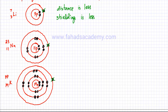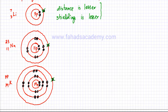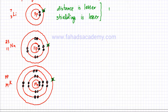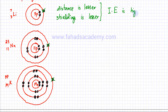Both distance and shielding are lesser for lithium, which means it's close to the nucleus and there would be more attraction. That suggests that the ionization energy of lithium compared to the other two is going to be higher — it's going to require a lot more energy to remove an electron. So ionization energy is comparatively higher.